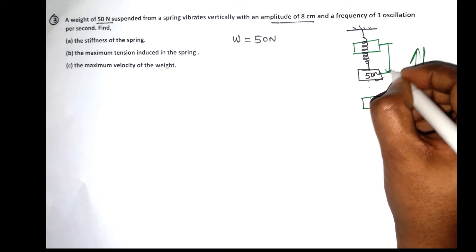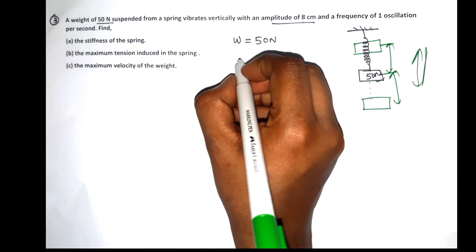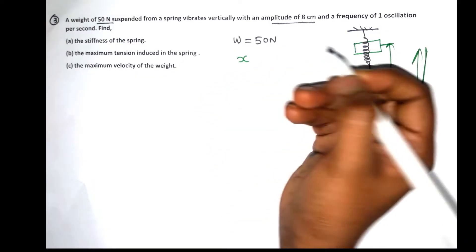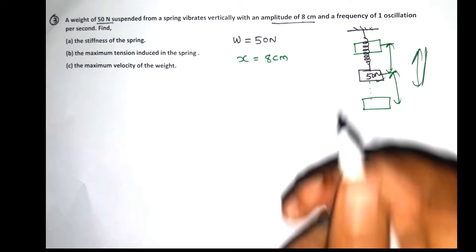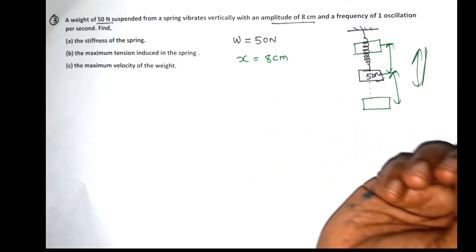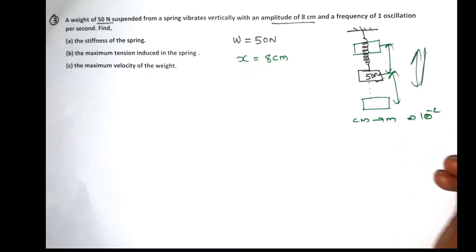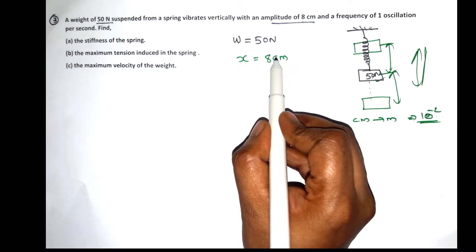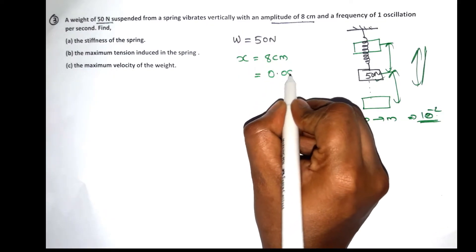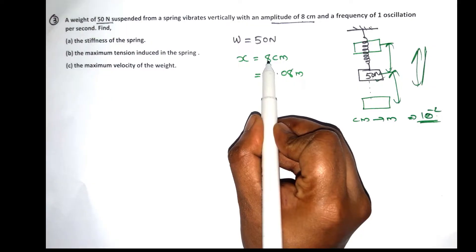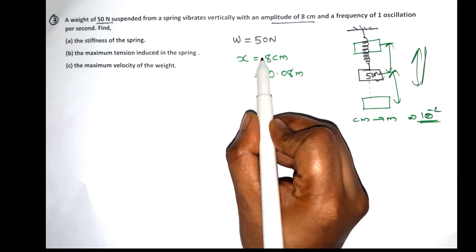In the maximum position, the distance is equal to the amplitude. The amplitude is 8 cm, so x is equal to 8 cm. Converting to standard units, we multiply by 10 to the power of negative 2, giving x equal to 0.08 meters.